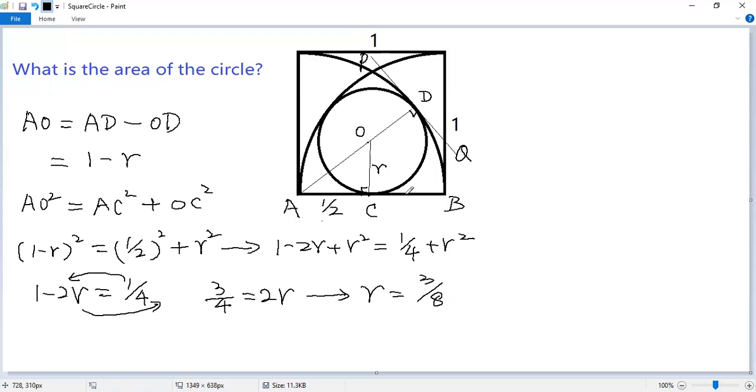That's the radius. So the area of the circle equals pi r squared, plug in, pi times (3 over 8) squared. So the final answer should be 9 pi over 64.